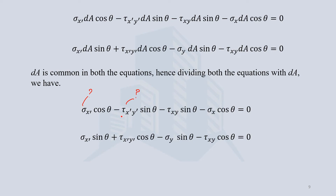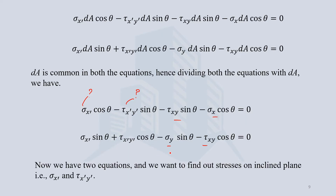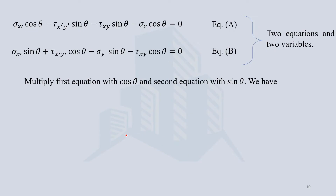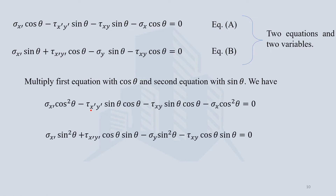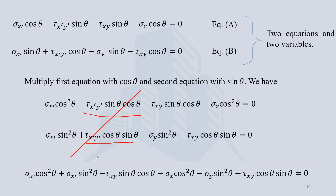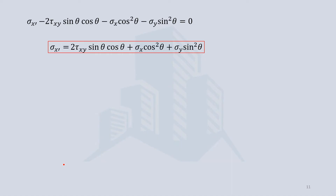To find sigma x-dash, we multiply the first equation by cos theta and the second by sine theta. The tau x-dash y-dash terms are opposite in sign, so adding the equations eliminates that term. Simplifying further gives us the equation for sigma x-dash in terms of the known plane stresses sigma x, sigma y, and tau x-y.